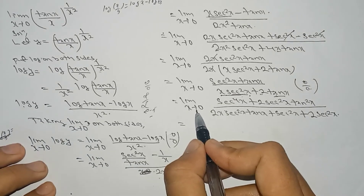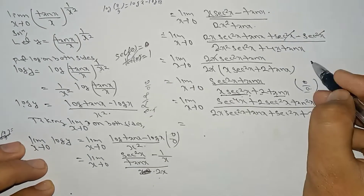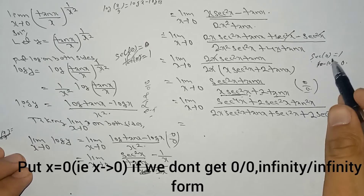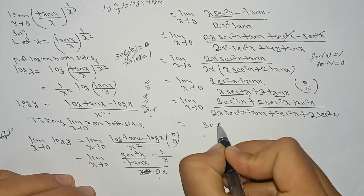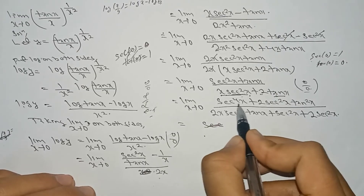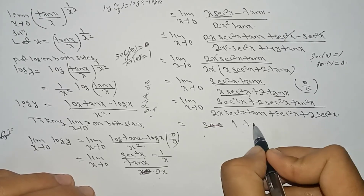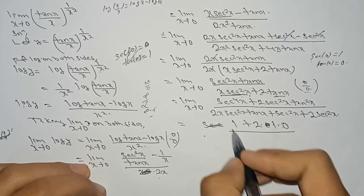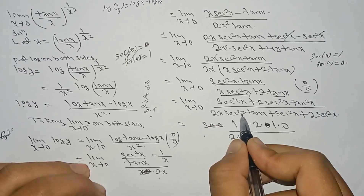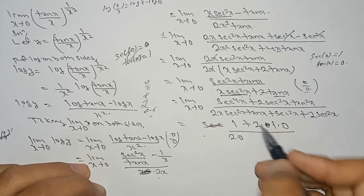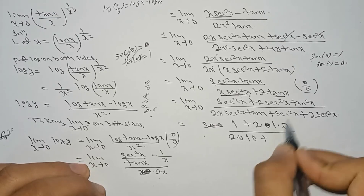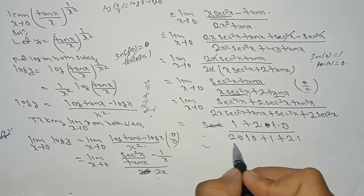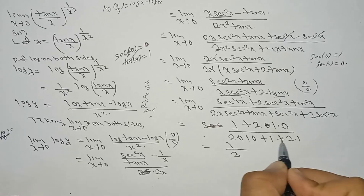Now if we put x = 0: sec(0) = 1 and tan(0) = 0. In the numerator: sec⁴(0) + 2·sec²(0)·tan²(0) = 1 + 2·1·0 = 1. In the denominator: 2·0·sec²(0)·tan(0) + sec²(0) + 2·sec²(0) = 0 + 1 + 2·1 = 3. So we obtain limit x→0 of log y = 1/3.